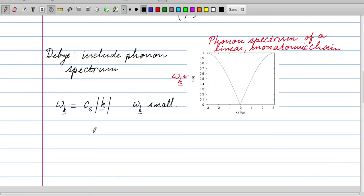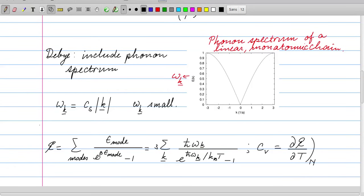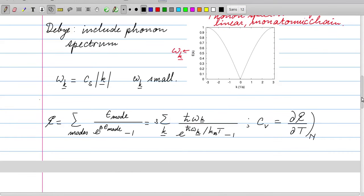Let's first consider the energy. The energy is given as a sum over all the modes, and then we have the energy in a mode, and then e to the power beta of the times the energy in the mode minus one. How many modes are there? We have to sum over all the k's and then multiply by three because the atoms can vibrate in, or the elastic waves in a solid can have three different polarizations.